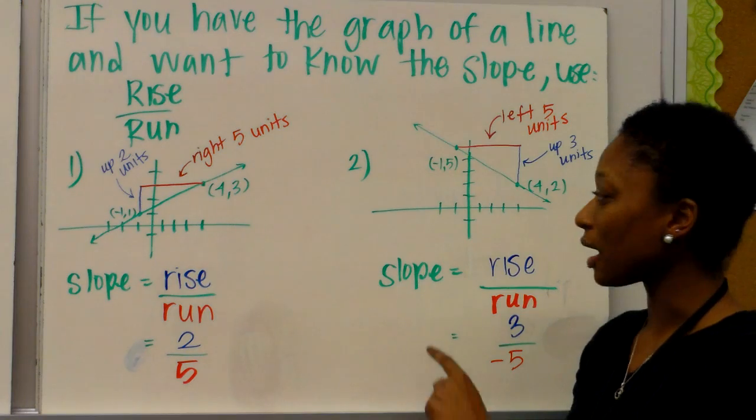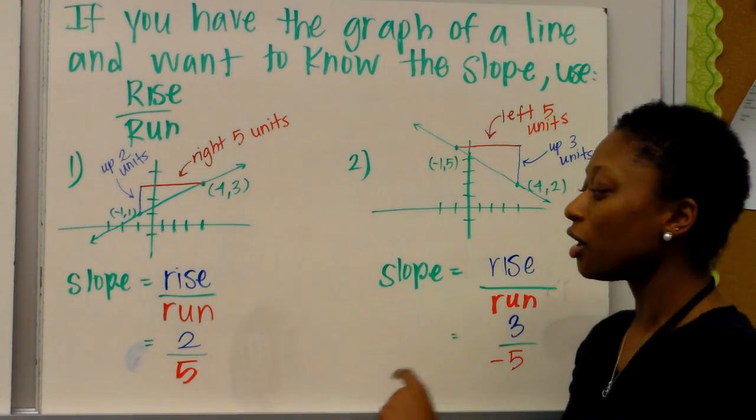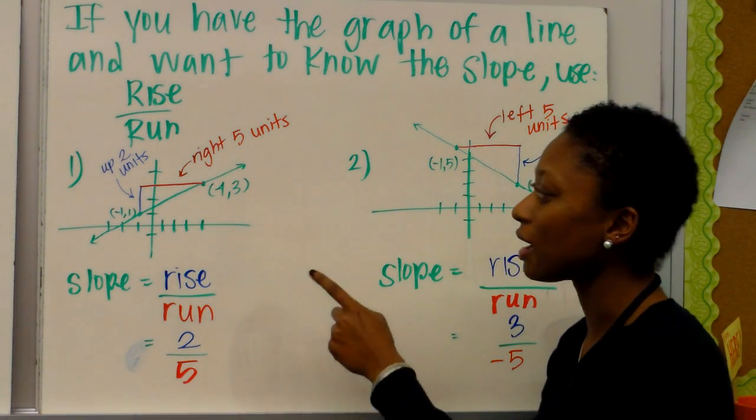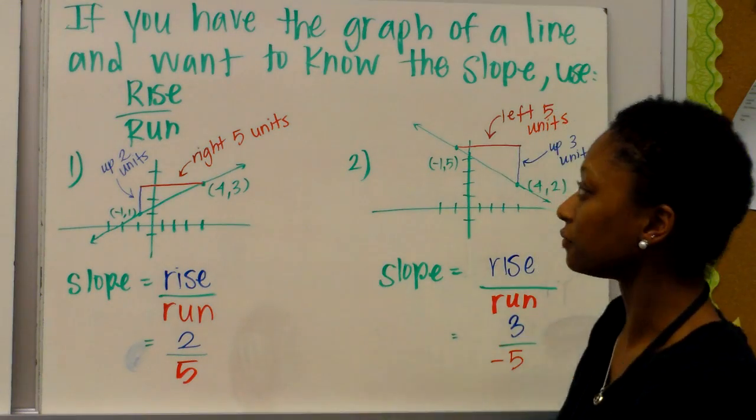When I have a negative slope, I will have a decreasing line. When I have a positive slope, I'll have an increasing line.